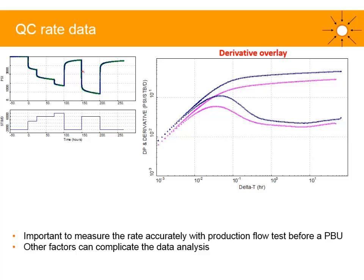Now assume we have a second PBU, and we plot the data from these two PBUs on the log-log or derivative plot. This is called a derivative overlay. In pink we have the derivative from the first PBU, and in dark blue the derivative from the second PBU. We can see that these two PBUs are not consistent — they are not tracking each other. The dark blue response appears shifted upwards, a sort of parallel shift between the two.